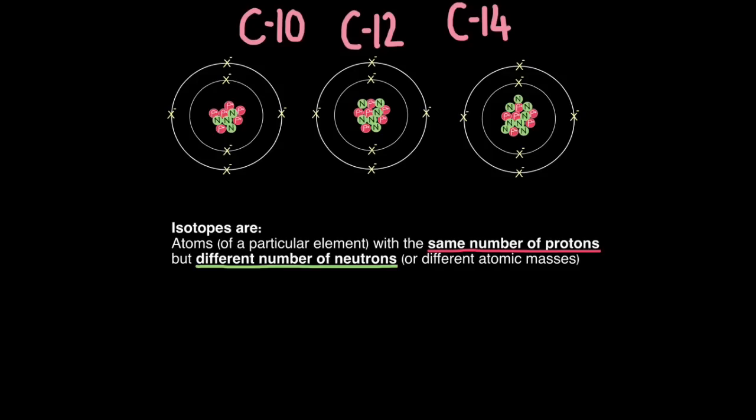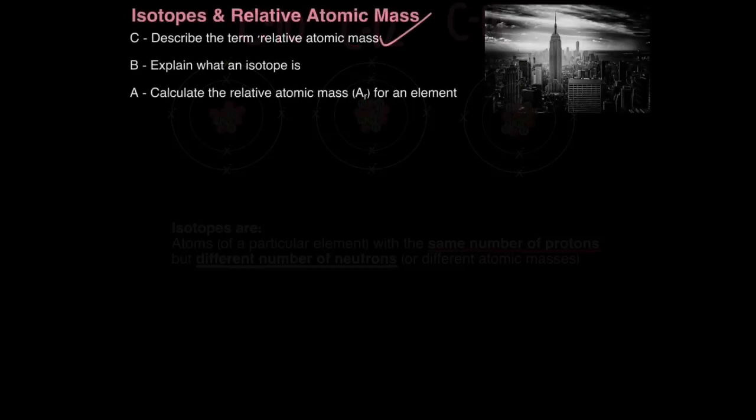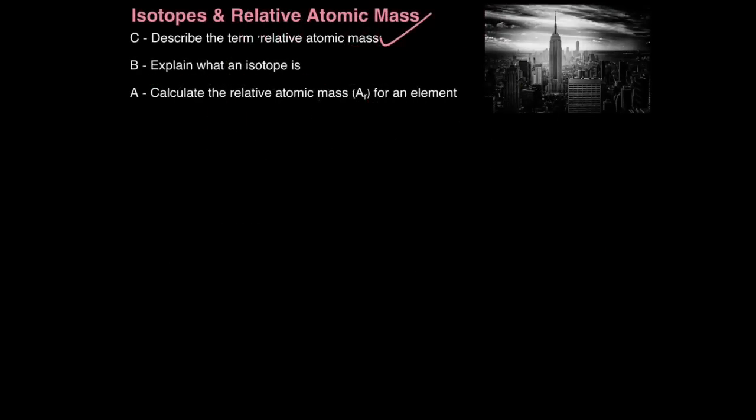So the textbook definition of an isotope would be isotopes are atoms of a particular element with the same number of protons but different number of neutrons. Or you could say different atomic masses. These are the two most important statements you need to include in your answer when addressing how to explain what an isotope is. And I hope this diagram makes it very clear. Same number of protons but different number of neutrons. And you can apply this logic to any element in the periodic table. I've just chosen carbon. So that is how you explain what an isotope is.